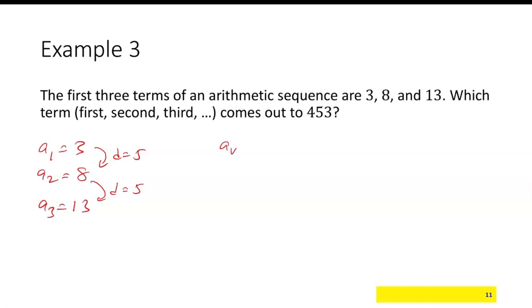So that means our general term, a sub n, is going to be, I start with 3, plus n minus 1 times 5. And I want to figure out the term that comes out to be 453. So I'll set the general term equal to 453, and now I just want to figure out what is n.